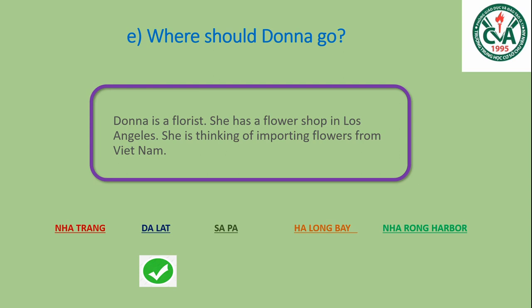Như vậy mình đã đề nghị được 5 bạn đến 5 điểm khác nhau rồi. Bây giờ bài học của chúng ta đến đây là hết rồi. Cô đề nghị các bạn nên xem lại clip video của tuần trước về từ vựng. Tuần này thì các bạn nên lấy lại 4 tờ quảng cáo này, đọc đi đọc lại, và làm lại bài tập số 1 và bài tập số 2. Cô chúc các bạn có một quá trình học thật hiệu quả.